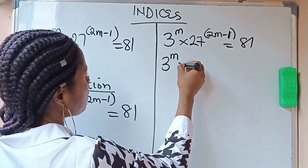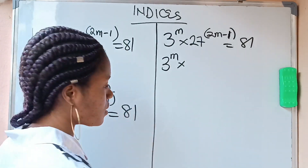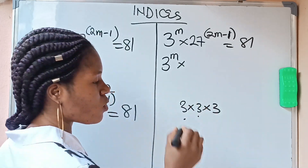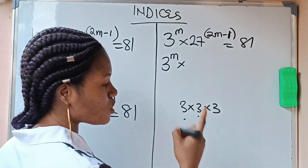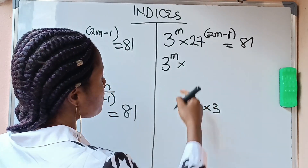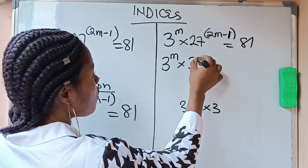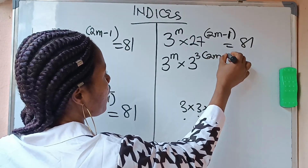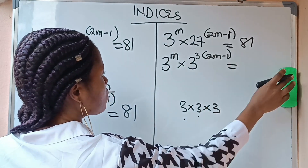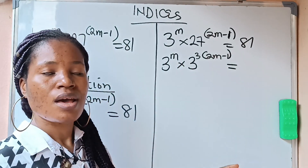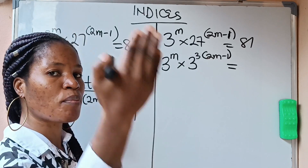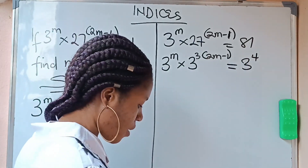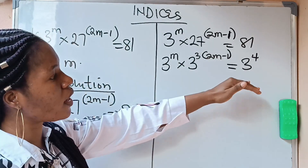27 is the same as 3 raised to the power of 3, because 3 times 3 is 9, and 9 times 3 is 27. So we can replace 27 with 3 raised to the power of 3, and we still have 2m minus 1 as the outer exponent. Similarly, 81 is the same as 3 raised to the power of 4, so we replace 81 with 3 raised to the power of 4.